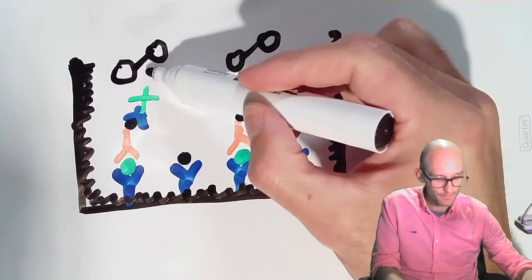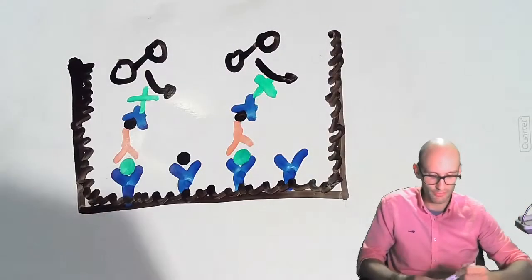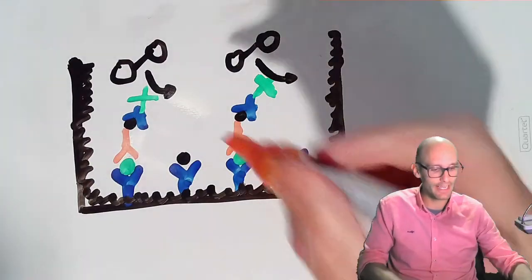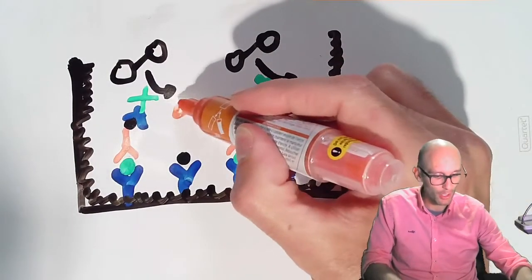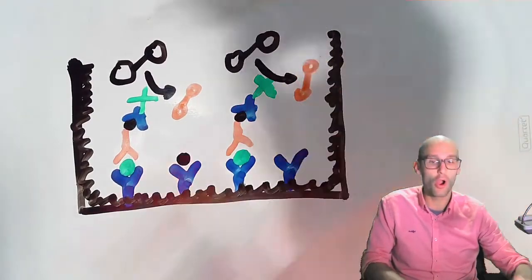So this enzyme, this peroxidase, undergoes a reaction. And this reaction now forms a colored molecule. And we can let this reaction go over and over again.